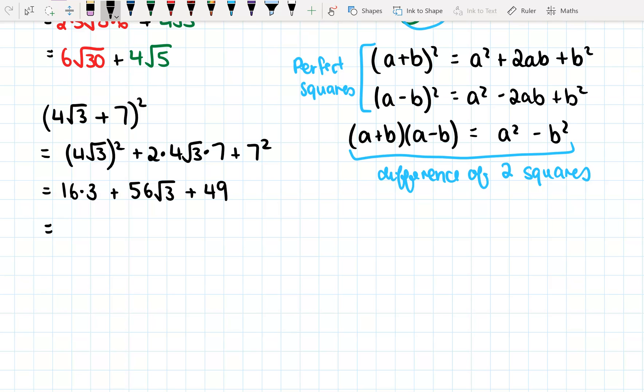Okay, we're going to simplify this a bit further. 16 times 3 is 48. Plus 56√3 plus 49. Okay, and 48 plus 49 is 97. So 97 + 56√3 is what we get as an answer for this one. Alright, this is the kind of process we want you to go through.